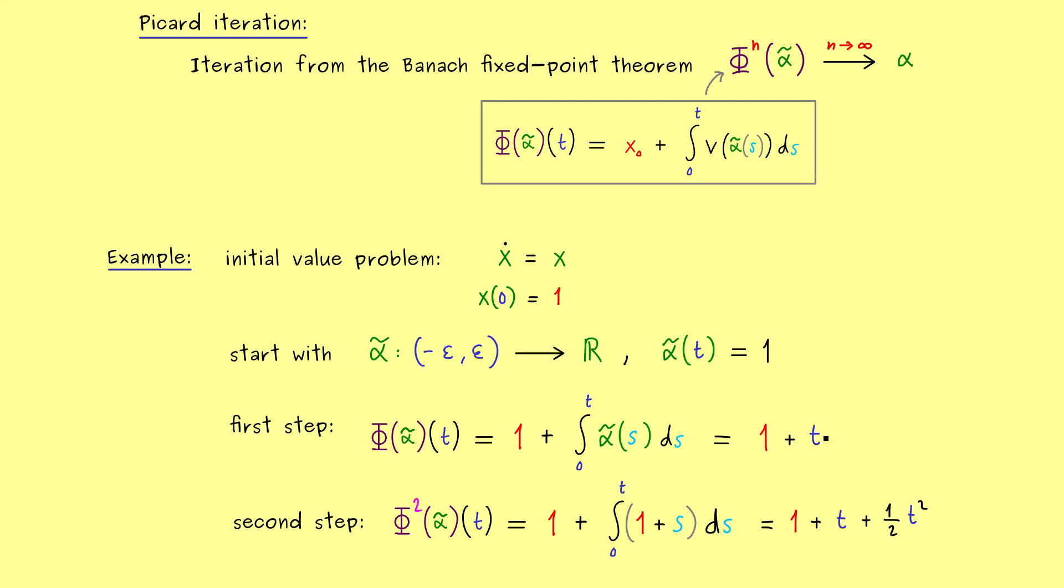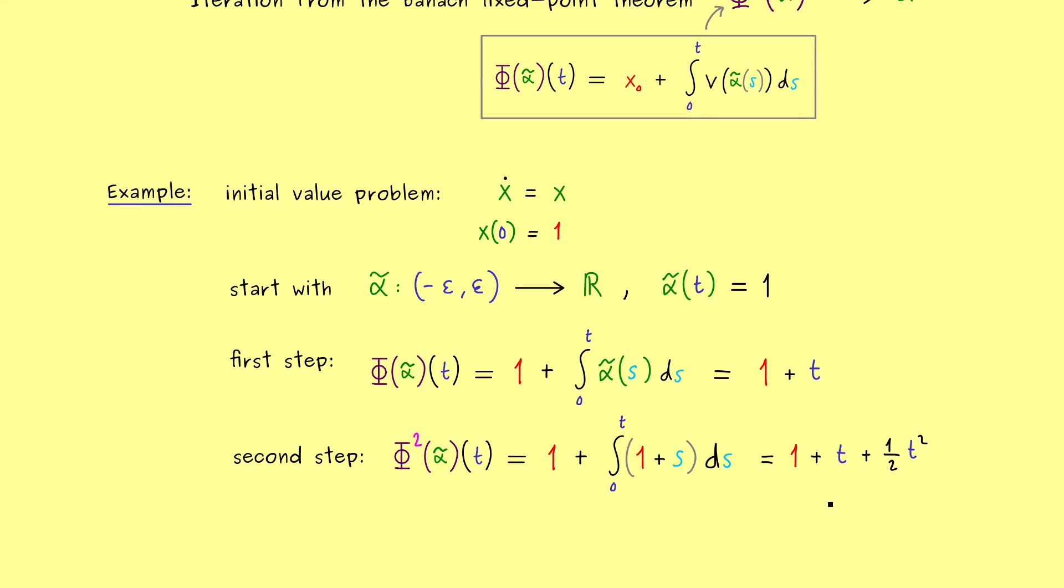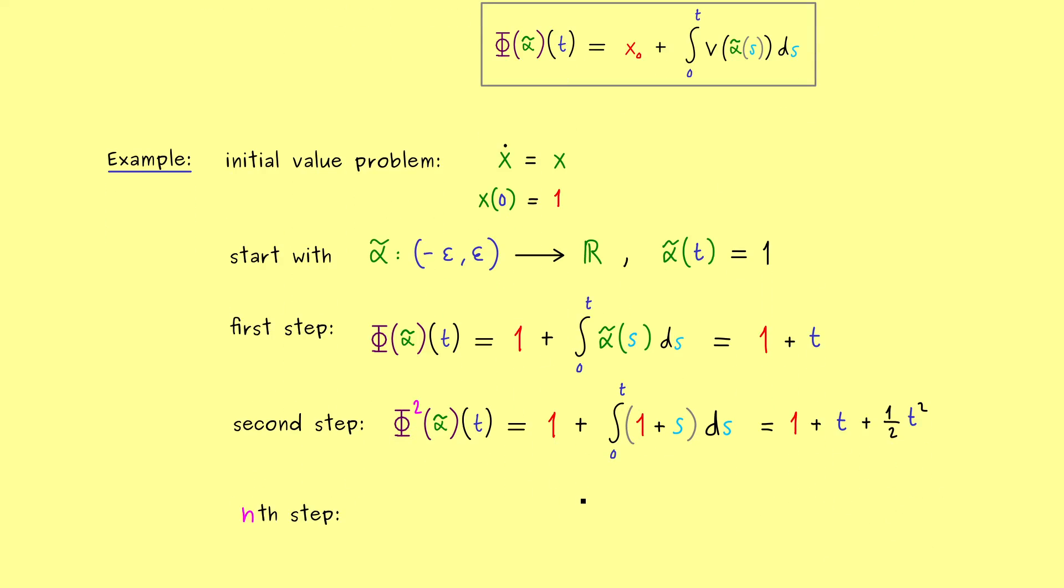And again this is our new function we put into our map phi as well. But maybe at this point you can already see the general formula for the nth step here. Moreover then you should also be able to prove it by induction. More precisely if you repeat this integration you see the next term would be 1 over 6 t to the power 3. And then we would get the power 4 and so on until we get the nth power of t. And then it turns out that the factor in front is indeed 1 over n factorial.